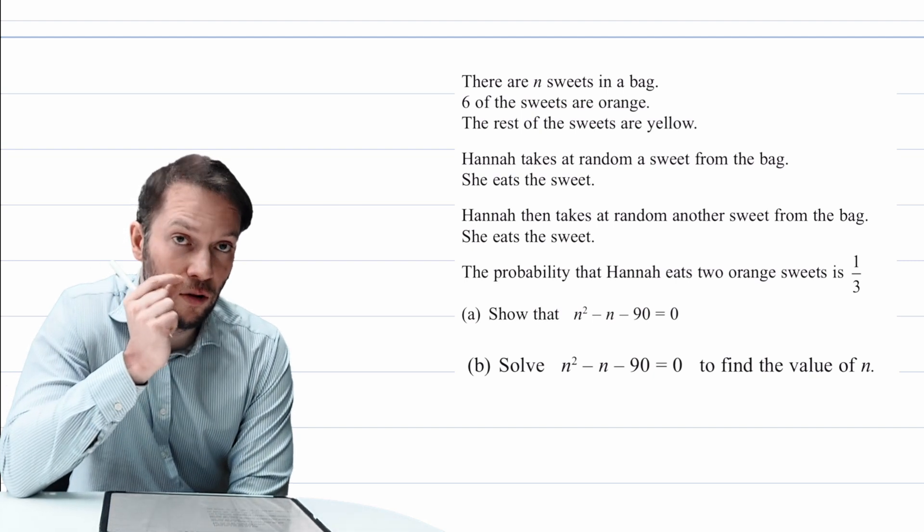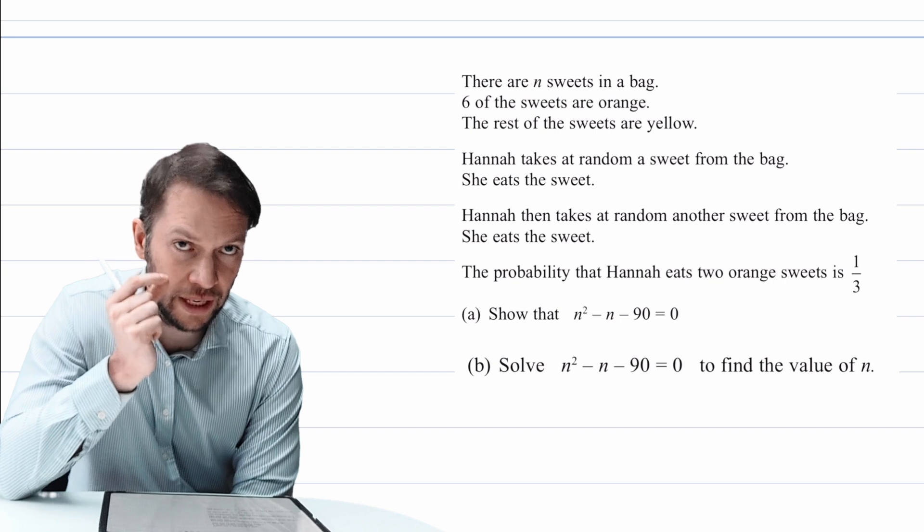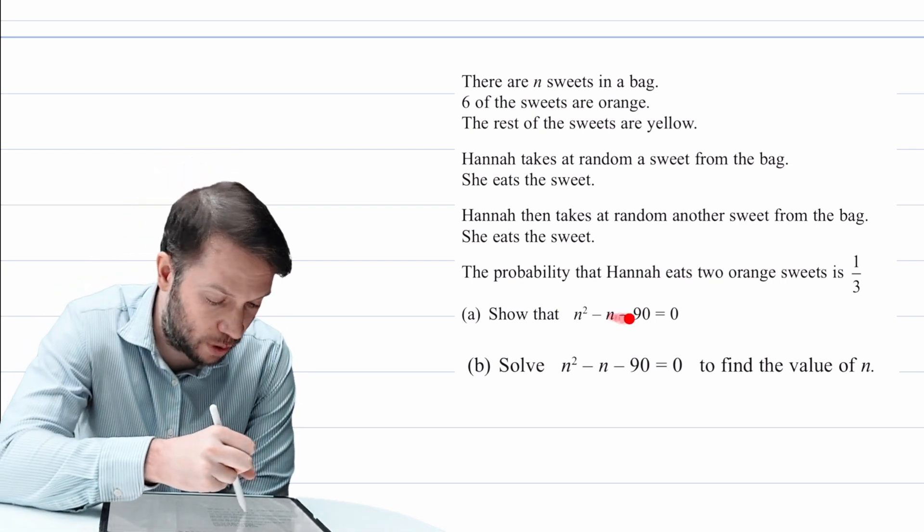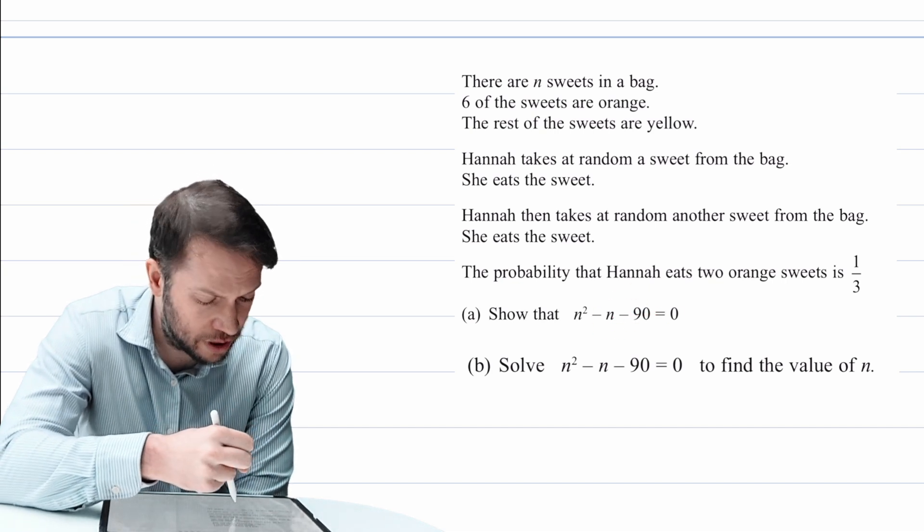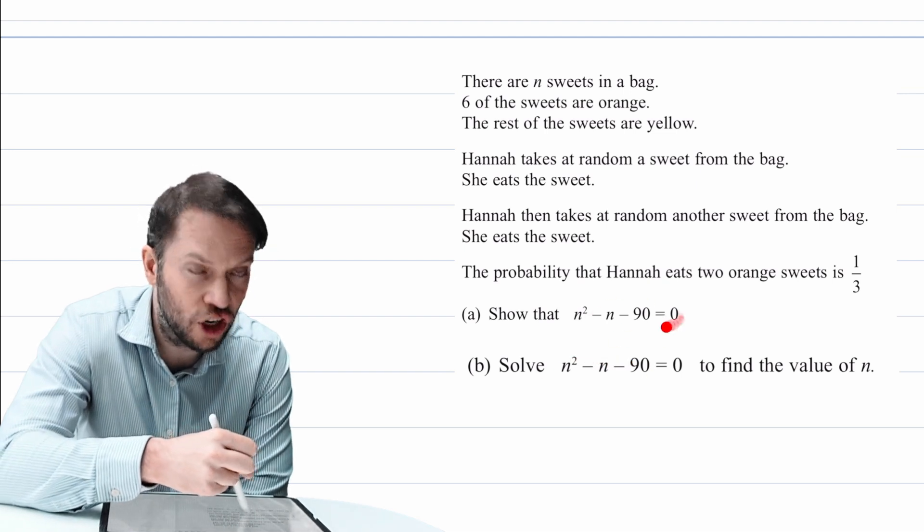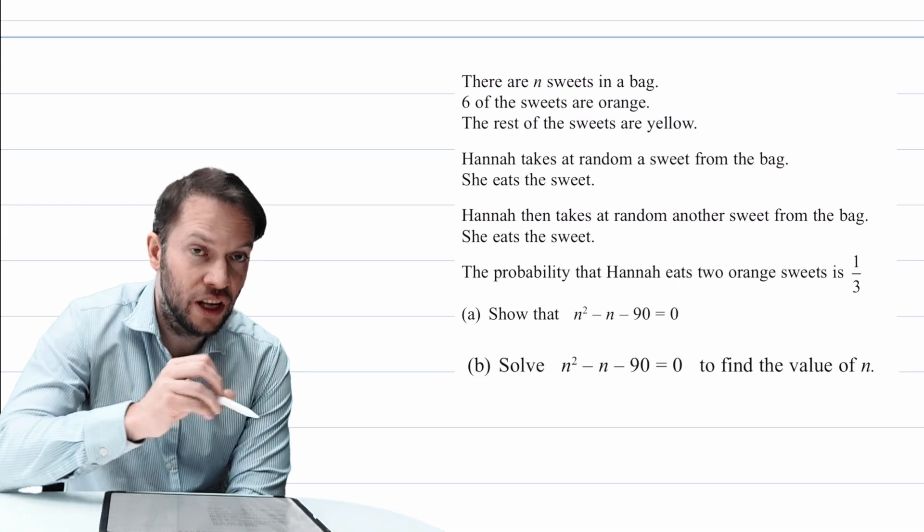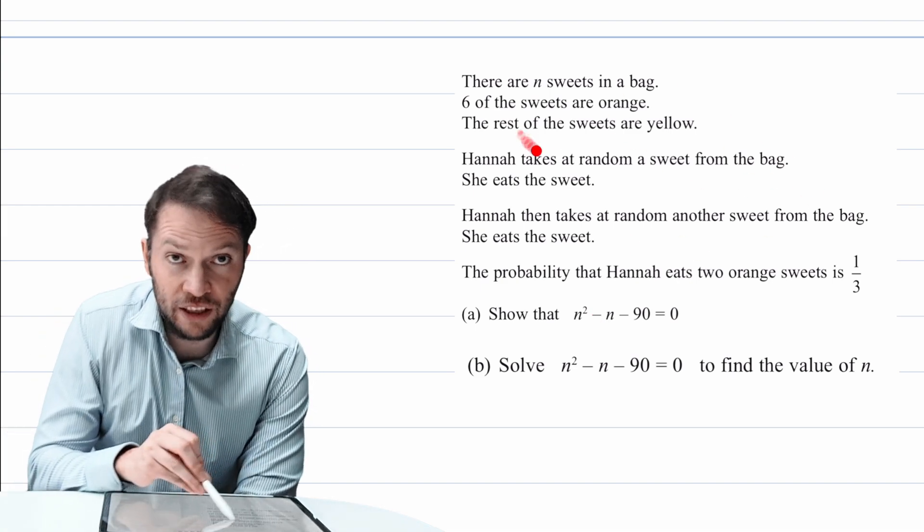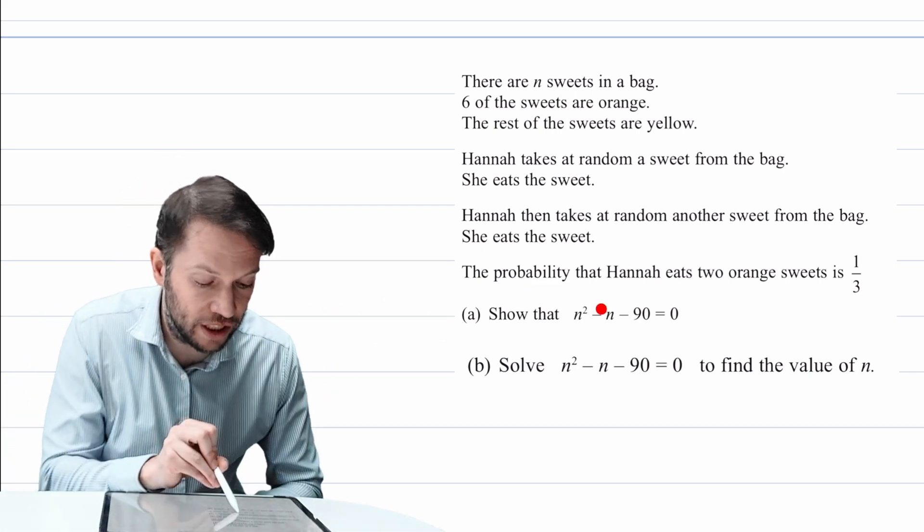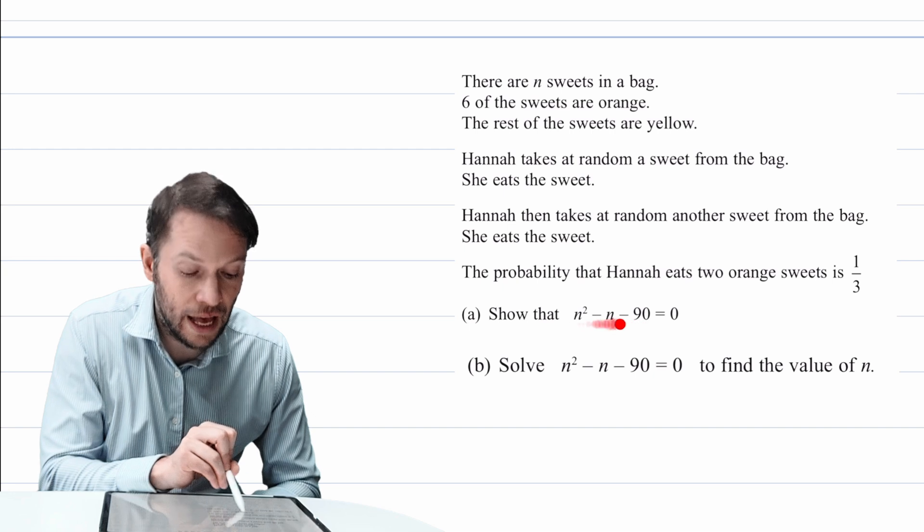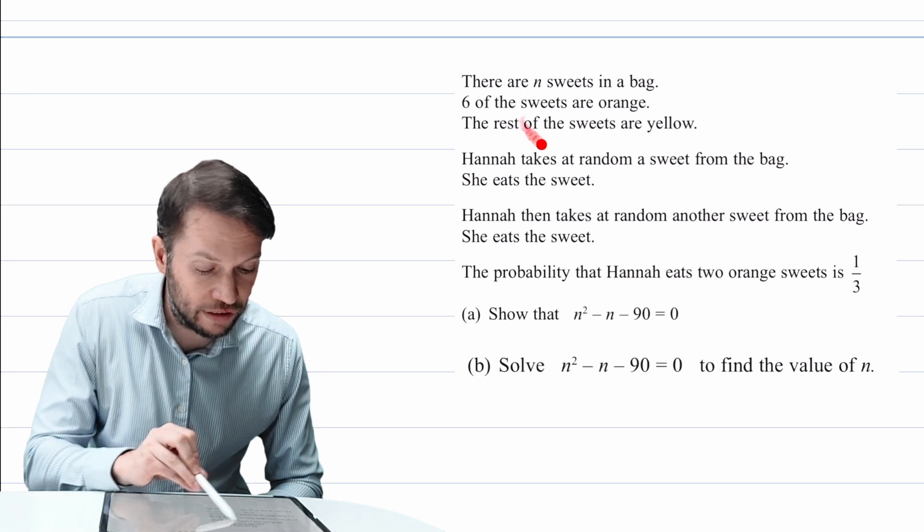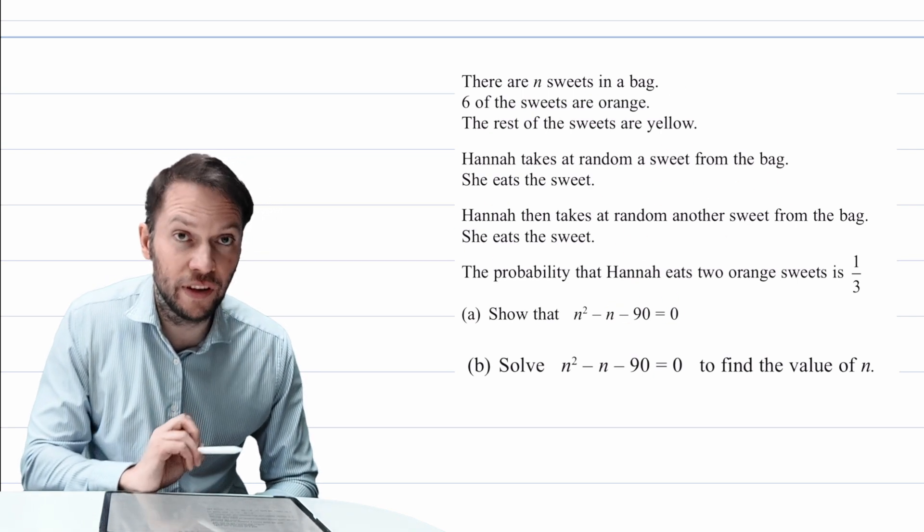Now, the first thing to make really clear is that when it says show that, that doesn't mean solve. What a number of students would have done in this exam is that they would have just seen this particular equation here and tried to solve it to find the value of n. But that's the second part of the question. So what does it mean to show that? Well, to show that we can get this equation means to use the information from the question, this context here, to somehow come up with, to generate this equation that we've got here. And then the next part of the question, once we've got that equation, is to solve it to find the value of n.